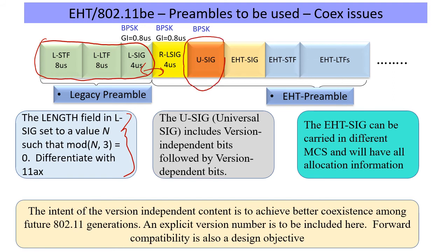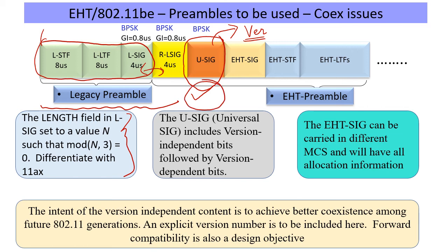What about the future generation? This is where 11be and Wi-Fi 7 takes a new step by introducing what is called a USIG, where an explicit version number of the standard starting with 11be or Wi-Fi 7 is mentioned. This is important because new generations will no longer need to struggle with auto-detecting which generation PPDU it is — the USIG carries that information explicitly. So from now on, while we remain nice to all previous generations, we also make it friendly for new generations to infer that this is a new generation transmission. This is the first time we are doing this.